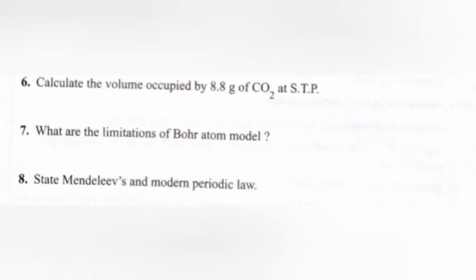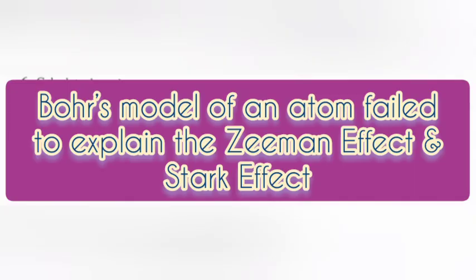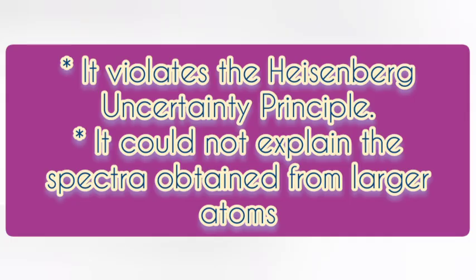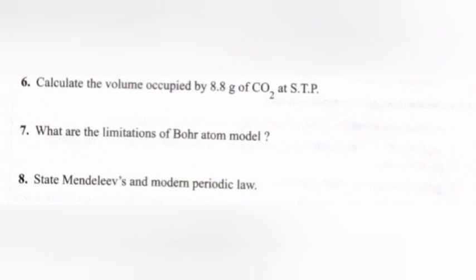Question 6: Calculate the volume occupied by 8.8 grams of CO2 at STP. Answer: 5.05 liters. Question 7: What are the limitations of the Bohr atomic model? Answer: The Bohr model failed to explain the Zeeman effect and Stark effect, it violates the Heisenberg uncertainty principle, and it could not explain the spectra obtained from larger atoms.